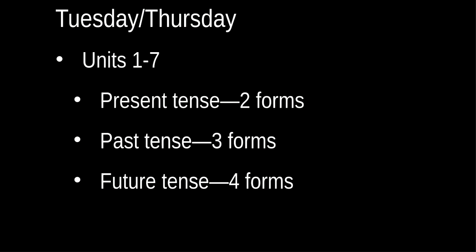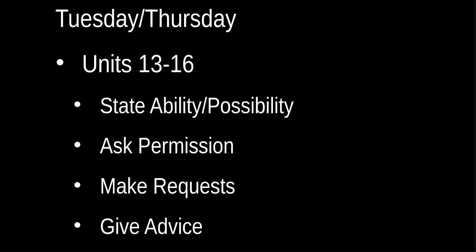After unit seven we're going to skip directly to units 13 through 16, which means we're skipping 8 through 12 to do something else. Here we will talk about using modals and other things to state ability and possibility. This is where we'll do a lot with 'can' and 'can't,' which are very easy to misunderstand. We will ask permission, including 'do you mind if I do something?' We will make requests, which is 'would you mind doing something for me?' — a completely different structure — and 'please do this' and 'could you do this?' And then we will also give advice and warnings. There's an awful lot to do, which is why we only do a portion of the book every semester.